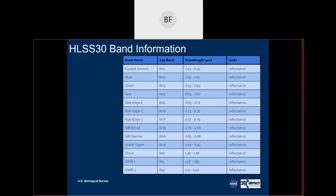For HLS-S30, all data is sensed in the visible to shortwave IR portion of the electromagnetic spectrum. In the file naming convention, you'll see band designations like B01, B02, B03, B04. For true color imagery, the bands are the same between HLS-S30 and HLS-L30, but they deviate from that point forward. Be aware that band names are not consistent between HLS-L30 and HLS-S30 — they retain the native product band names within the HLS GeoTIFFs.